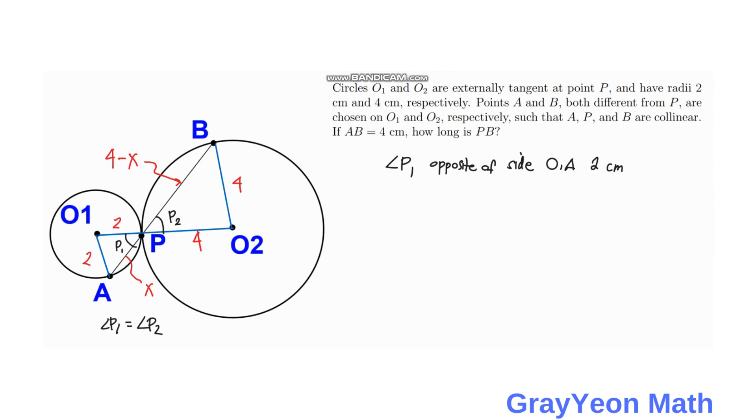And notice that angle A is opposite of the side O1P which is 2 cm. And since angle P1 and angle A are opposite of sides that are of the same length, then we can say that angle P1 is equal to angle A.